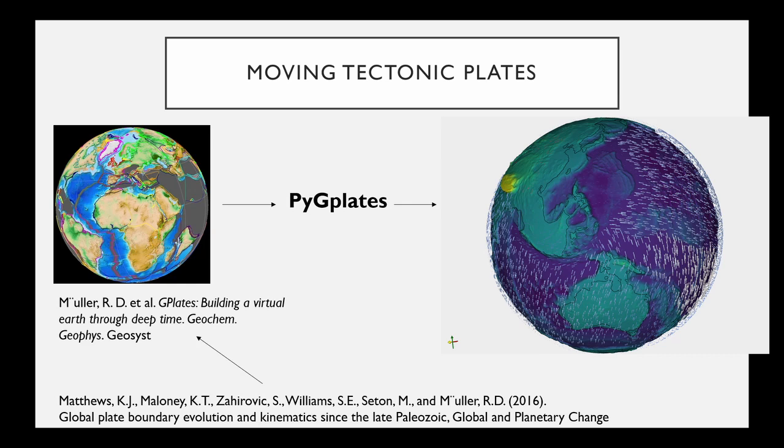We assign each vertex on a sphere an integer plate ID number to identify which plate it belongs to, and we then use rotational quaternions to move vertices on a given plate along the surface of our sphere.